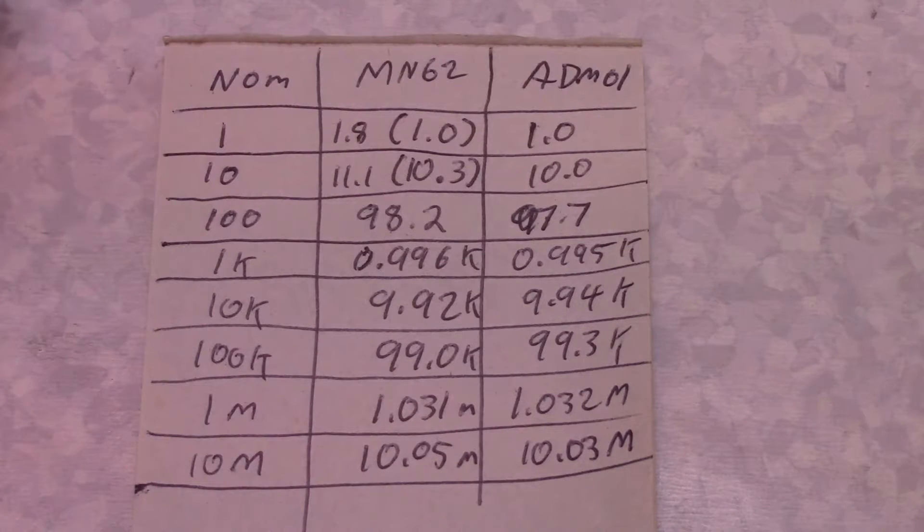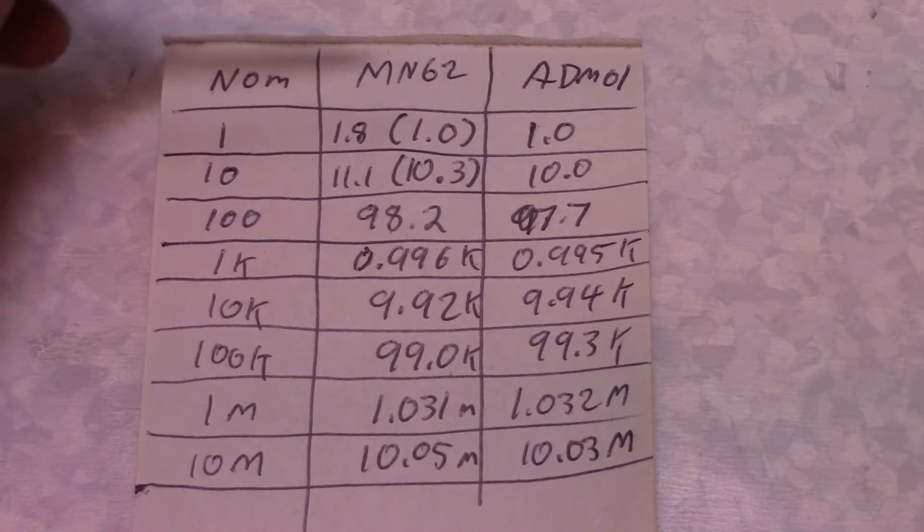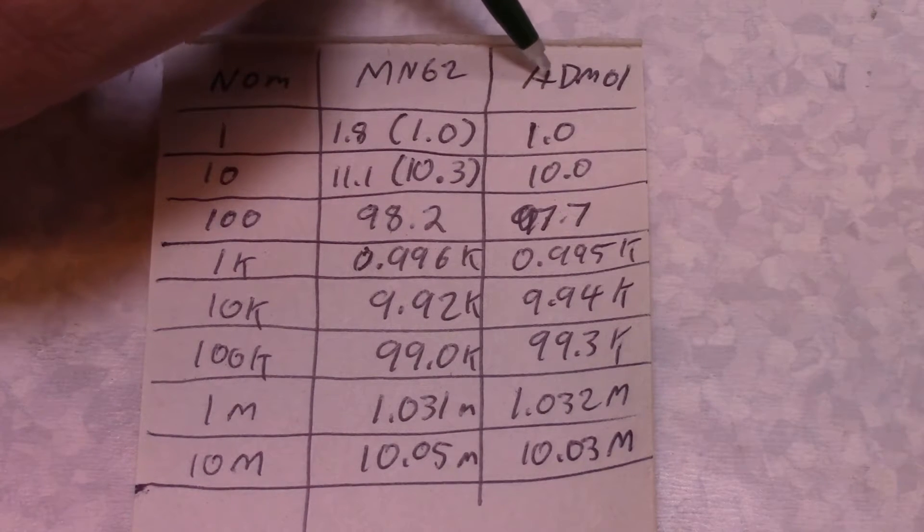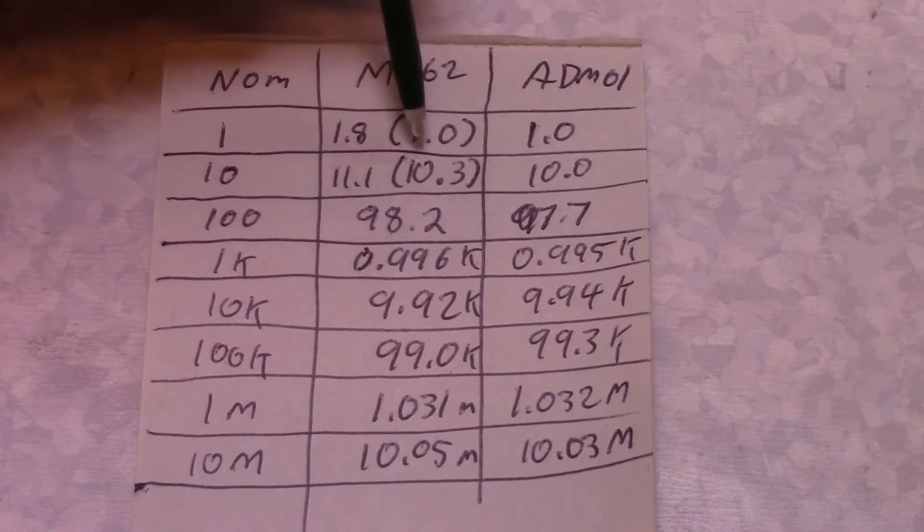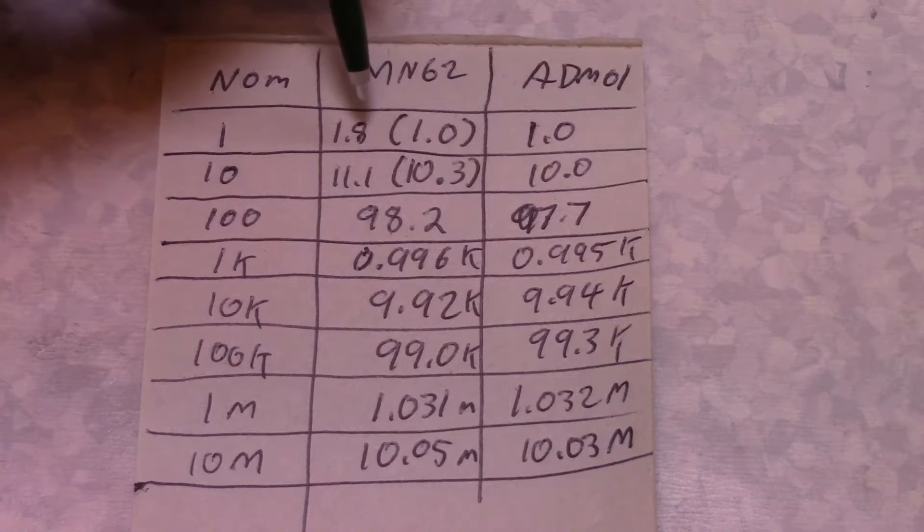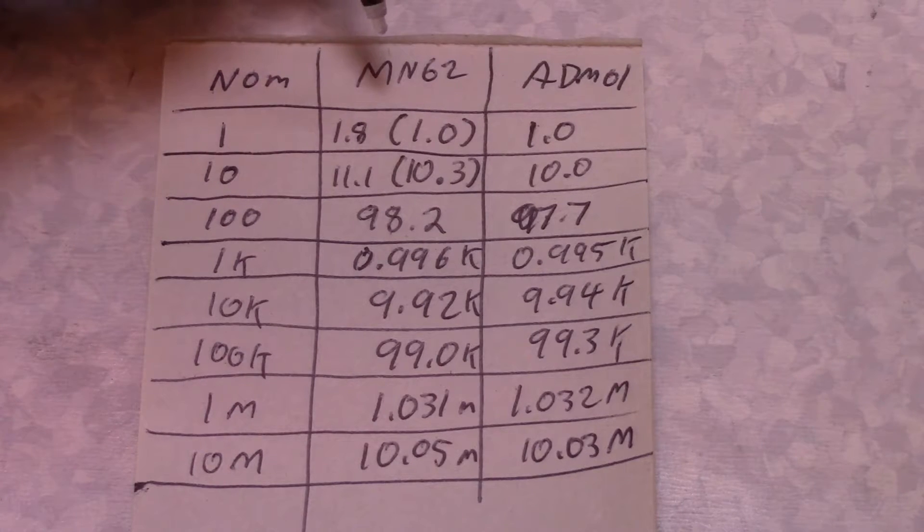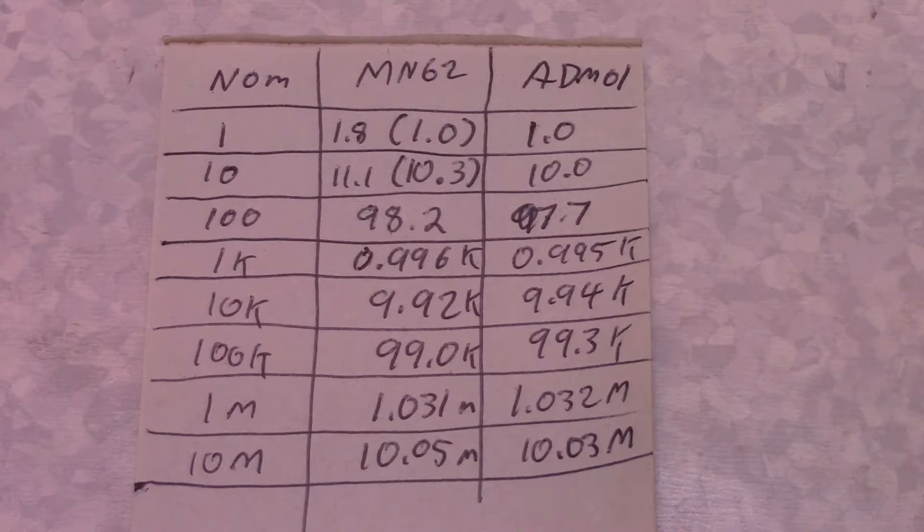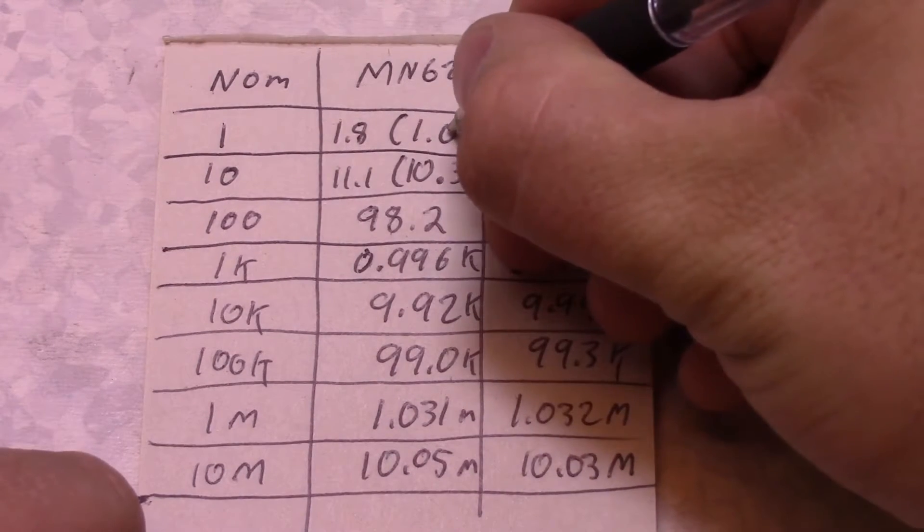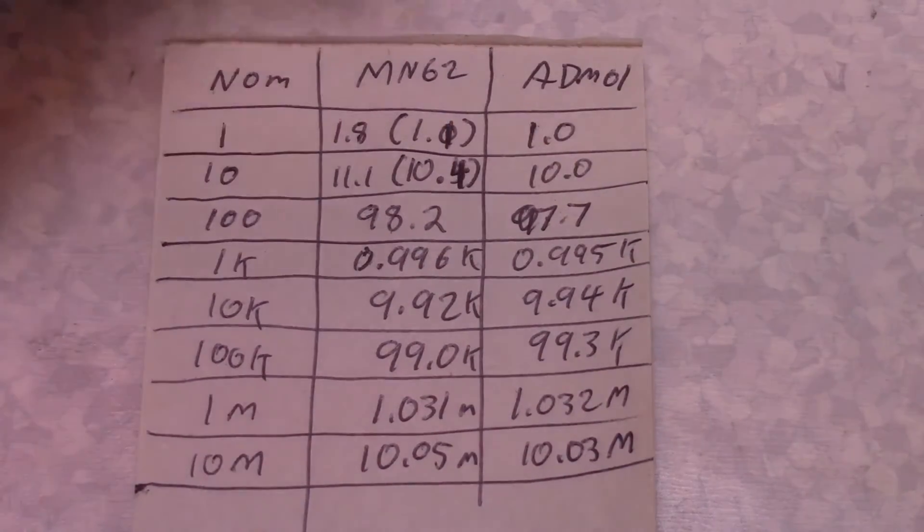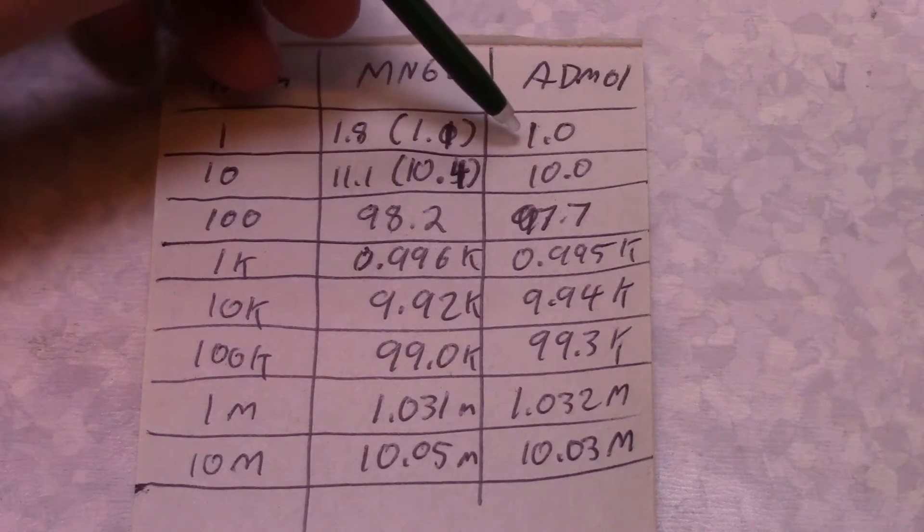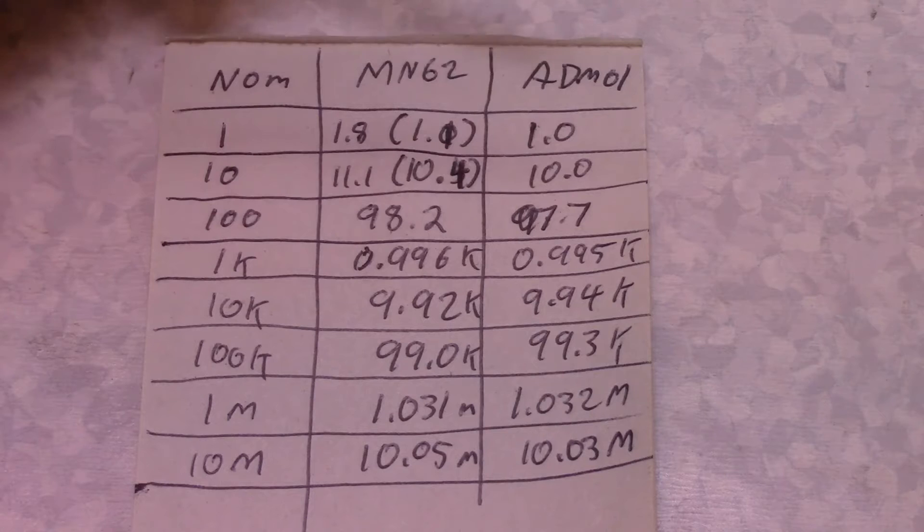All right, so here's my fancy little table. So, here's just the nominal resistor value. Here's what I measured it with the X-TEC. And then our cheap B-side meter here. So, I've got these two values here in brackets. And that's because when I measured the probe resistance, it was reading as 0.8, I believe. Oh, whoops, it was 0.7. So, I actually messed those up. That should be 1.1 and 10.4.